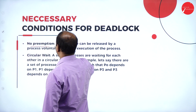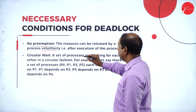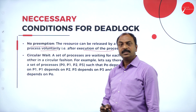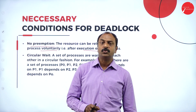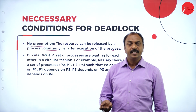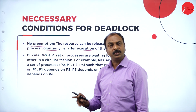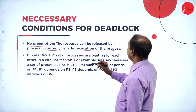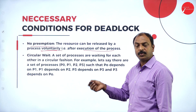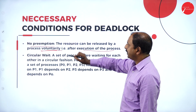The third condition is no preemption. A resource can be released by a process voluntarily — that is, after the execution of the process. When the process is in execution, it holds the hardware resources. Once the execution is completed, the particular process has to release those resources voluntarily. That is no preemption.